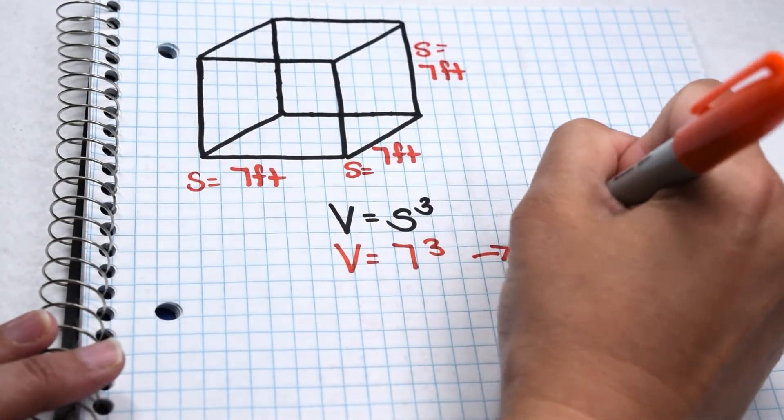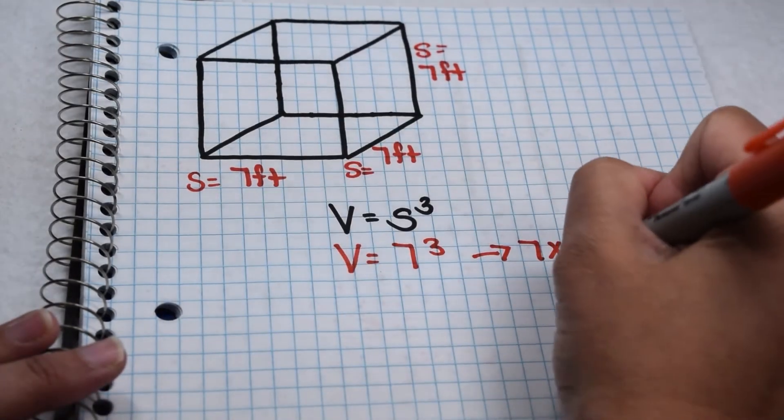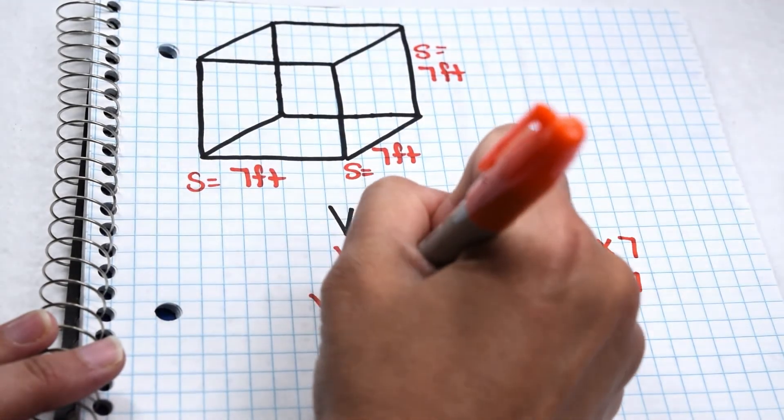7 to the third power means I need to multiply 7 times 7 times 7. 7 times 7 gives me 49. So then I need to do 49 times 7. 49 times 7 gives me 343.